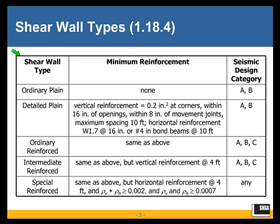There are five shear wall types. We're going to be focusing really on the reinforced shear walls — ordinary, intermediate, and special reinforced shear walls — and not on the unreinforced shear walls. The special reinforced shear walls, as you can see, can be used in any seismic design category, and in fact are the only shear wall type allowed in seismic design category D and higher.